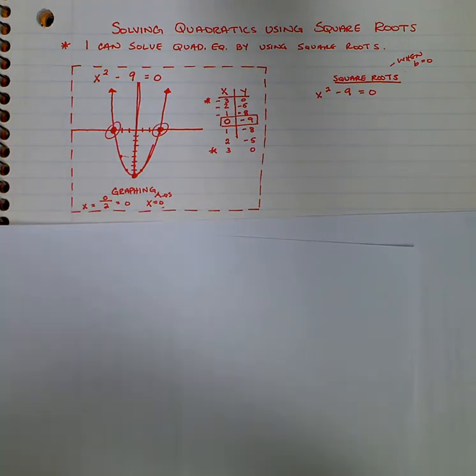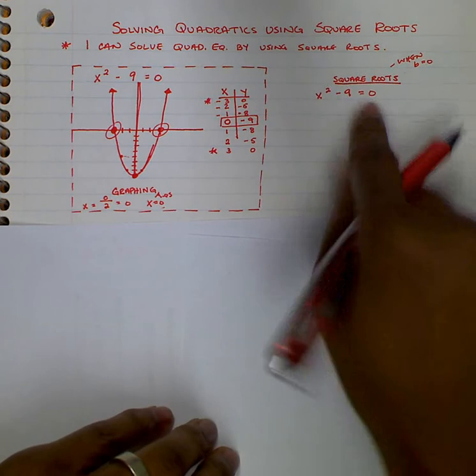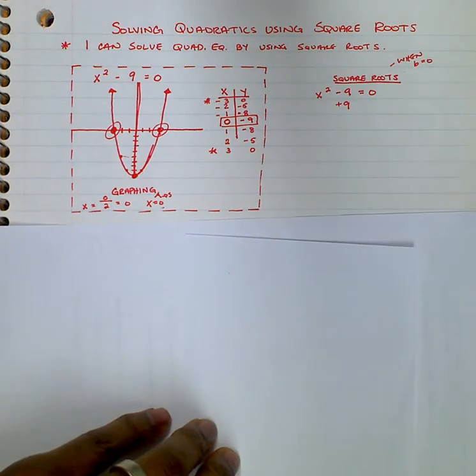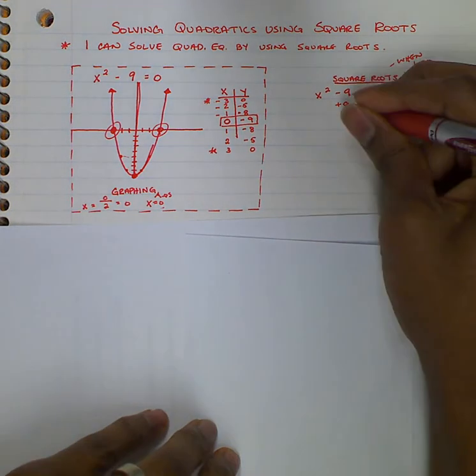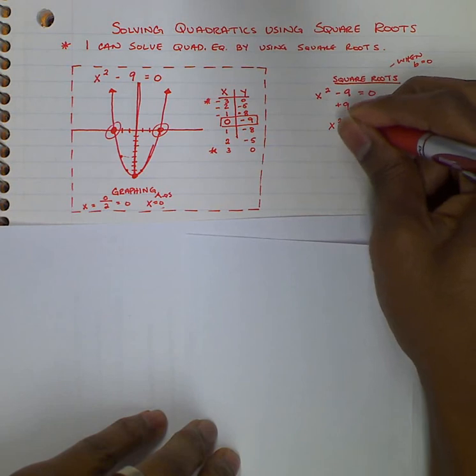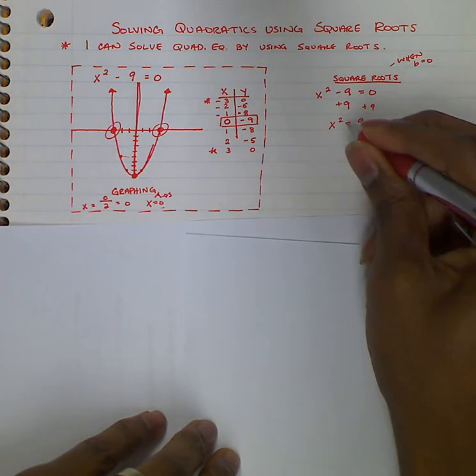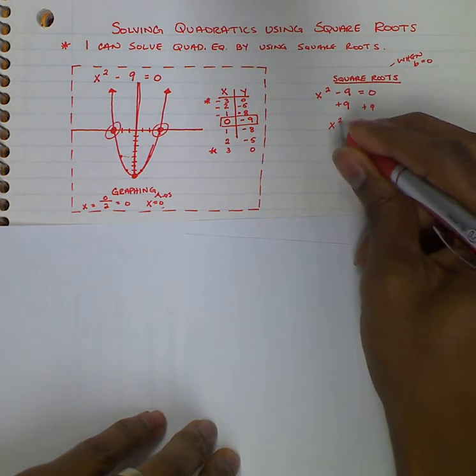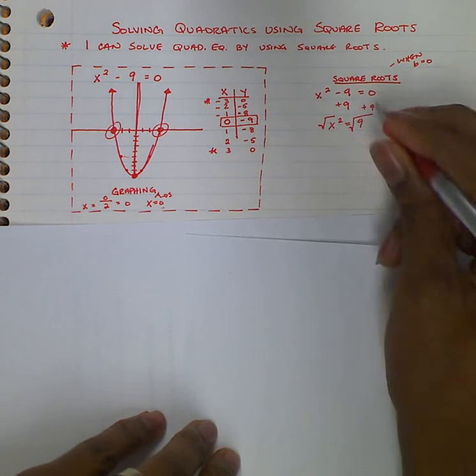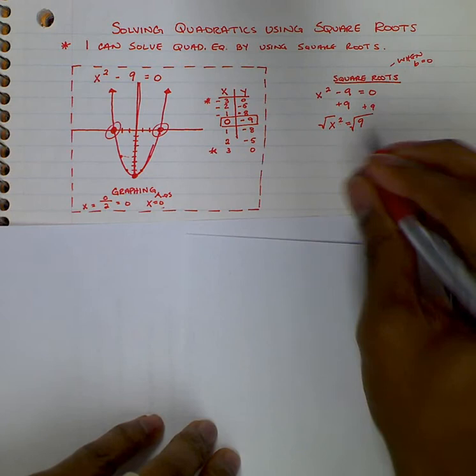So for this problem, we have x squared minus 9 equals 0. We'll isolate x, add 9 to both sides. Now x squared by itself, so x squared equals 9. And then to get x all the way by itself, we want to do the inverse of x squared and square root it. I square root the left side, I also square root the right side. So that gives us x.